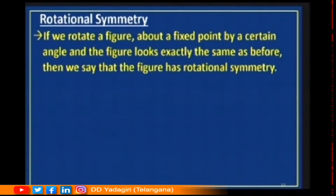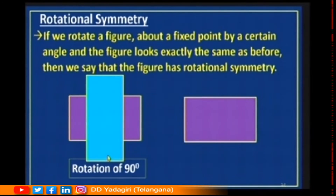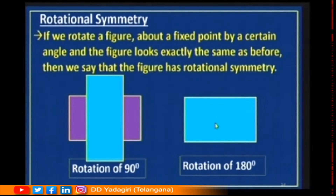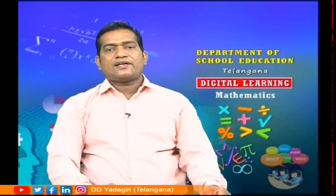Now let us understand rotational symmetry. If we rotate a figure about a fixed point by a certain angle and the figure looks exactly the same as before, then the figure has rotational symmetry. I am taking a rectangle and rotating it through 90 degrees — we do not get the same figure. But rotating it through 180 degrees gives the same figure. So a rectangle has rotational symmetry, and at 360 degrees it also looks the same.